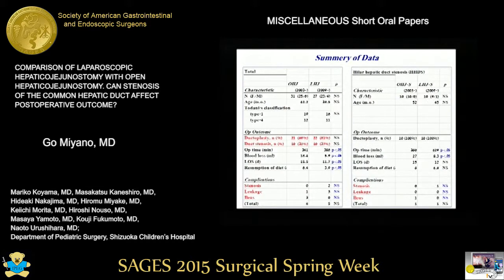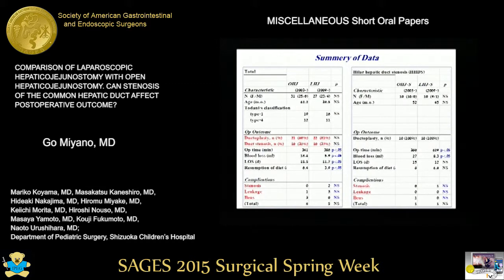Hepatic duct plasty was performed in 68% in OHJ and 81% in LHJ. There were no intraoperative complications and no conversion to open. There were no significant differences between LHJ versus OHJ, and LHJ stenosis versus OHJ stenosis, for postoperative complications including bile leakage, anastomotic stricture, and intestinal obstruction.